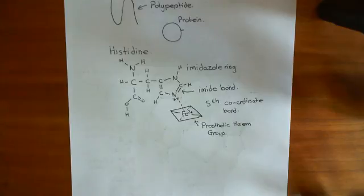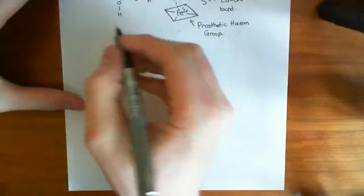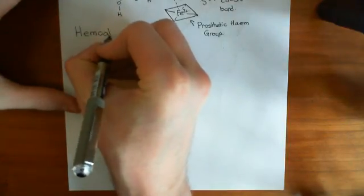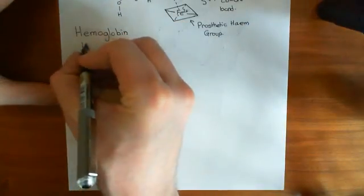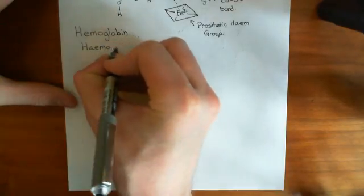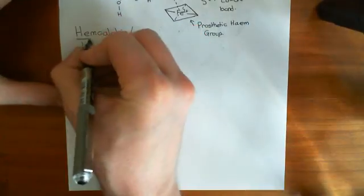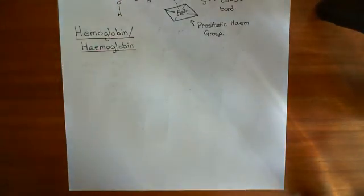Now we've discussed how we can stick heme groups onto the sides of proteins and get prosthetic heme groups, let's discuss hemoglobin — the archetypal example of a protein with a prosthetic heme group. Whether you write it as 'hemoglobin' in American English or 'haemoglobin' in British English, both are equally acceptable, though the American spelling is probably now dominating.